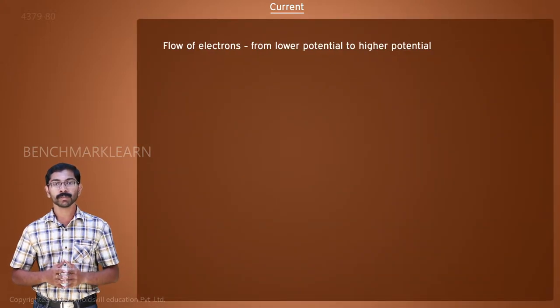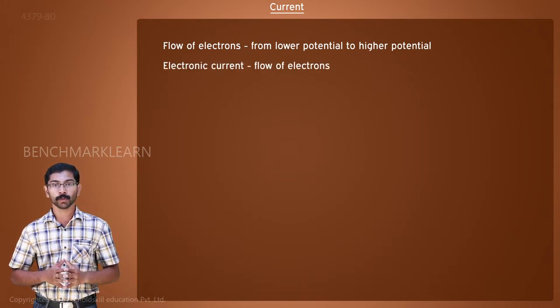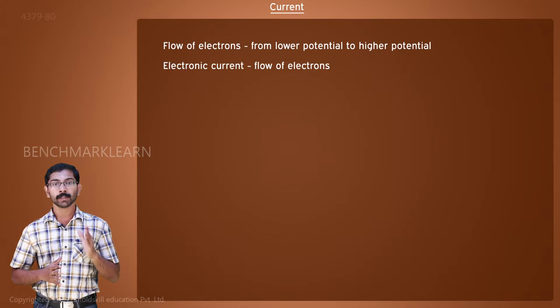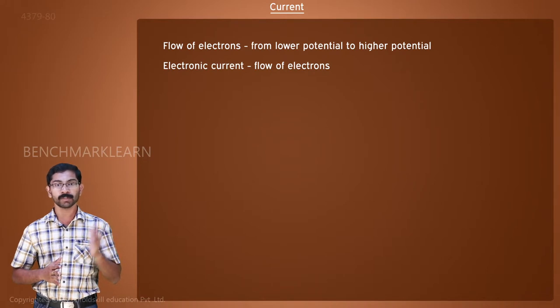The flow of electrons is from a lower potential to a higher potential region. This flow of electrons is called the electronic current. Physicists were studying electricity long before they knew about the structure of atom.